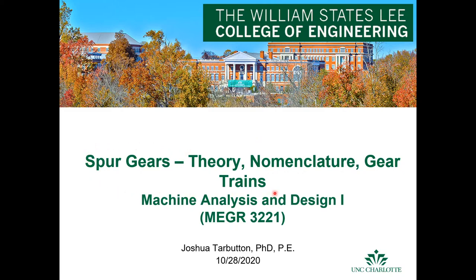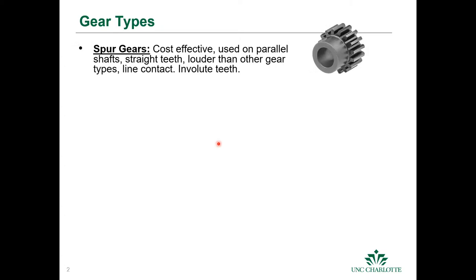We'll give an overview of how gears are designed, what the key parameters are, and how we use them with examples. The spur gear has a pretty unique tooth profile shape called an involute. These gears are cost effective, used on parallel shafts, have straight teeth, can be louder than other gear types, and provide a line contact if everything is perfectly aligned.